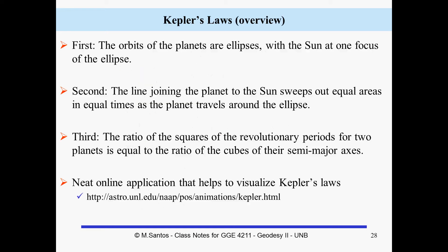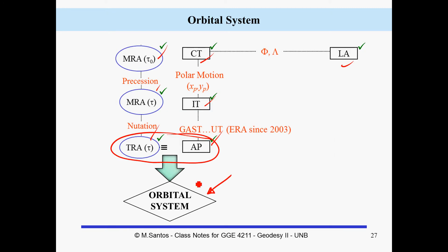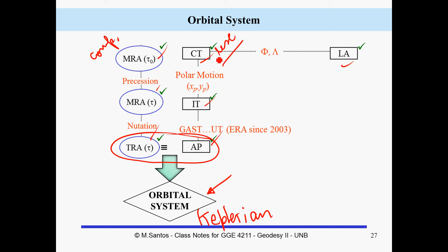That's going to be not a big topic. The importance of the orbital system is basically that it is the best suited for representing the orbits. We may represent the orbits in Cartesian coordinates, or may use the so-called Keplerian elements. The computational orbits go here, the use of orbits goes here, but the best representation is in the orbital system.